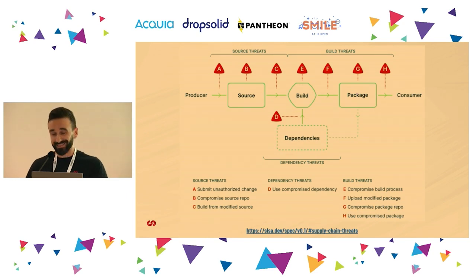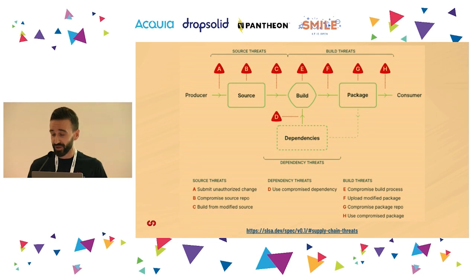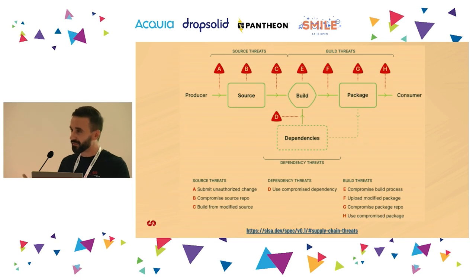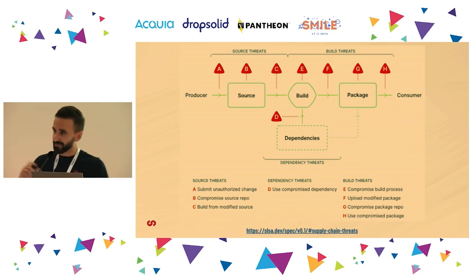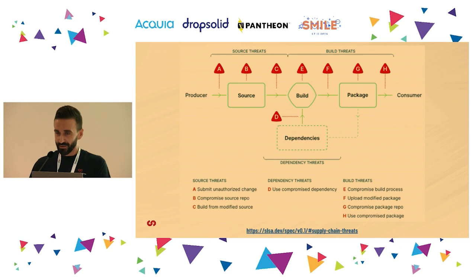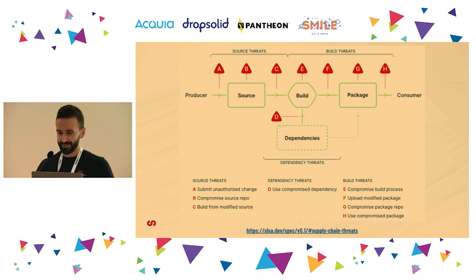Attacks can occur at any link of the software supply chain, not just dependencies. These kinds of attacks are increasingly public and disruptive — like the cases of SolarWinds, Codecov, Okta, and many others. I will show you something about SolarWinds in the next slides.